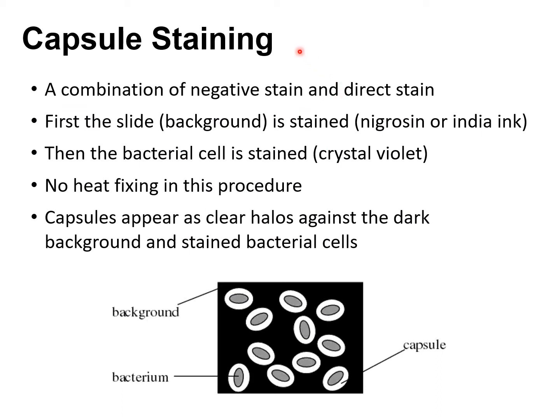The second special stain we're going to talk about is the capsule stain. A capsule is a layer found around some bacteria, on top of their cell wall — not all bacteria have capsules. To perform a capsule stain, we use a combination of a negative stain, which stains the background, and a direct or positive stain, which stains the cell itself. The very first step is to prep your smear, but with the capsule stain we do not heat fix.